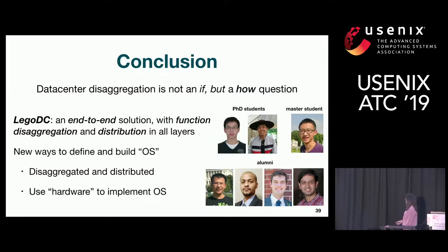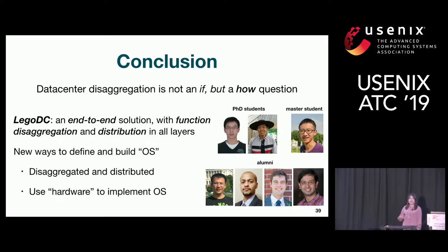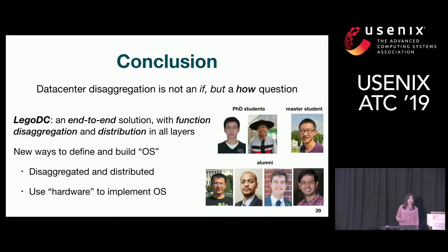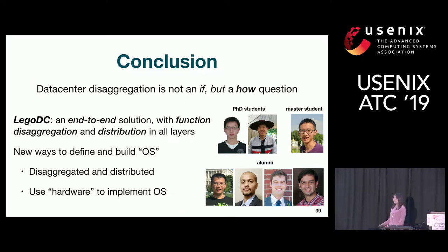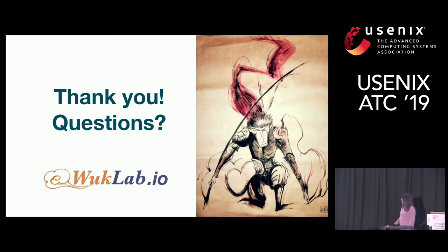As Gramsci said, our conclusion is always different from our summary. To conclude: data center disaggregation is not an 'if' question but a 'how' question. The approach we believe in is an end-to-end solution that does things from the ground up, pushing function disaggregation and distribution into all layers of the system stack. Building a kernel is fun, even though you write a lot of code. We're seeing new ways to build OS — maybe part of the OS is in user space, disaggregated, distributed, or maybe you can build the OS in hardware. I want to thank all my students who worked on LEGO DC.